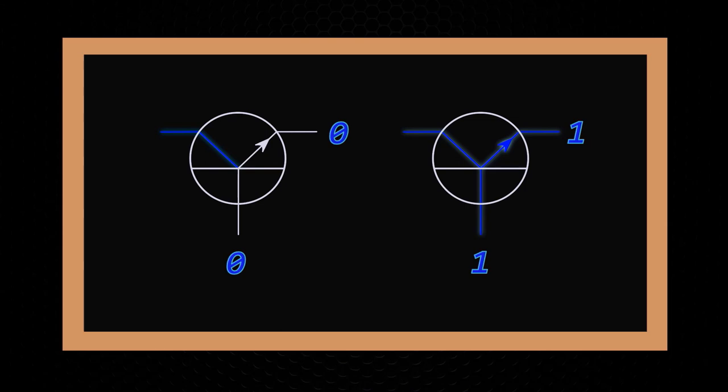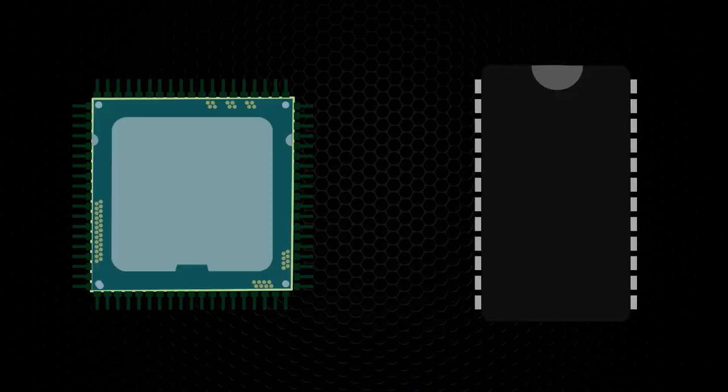In our model of a computer from the previous part, the computer was divided into two major components. We had a memory component to store information, and the CPU component, which was driven by a clock, to perform logic, including arithmetic, on that information. Each of these behaviors is constructed on an electronic level, using transistor-based circuits. So now we'll take a look at how some of this logic is performed in the circuitry.